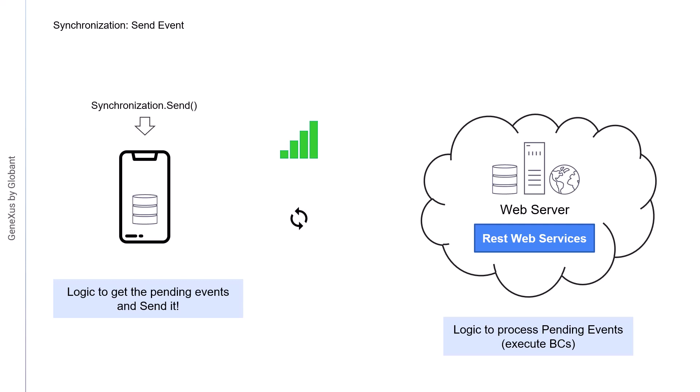The objective is to have the client run the least processing possible, because it has less power than the server. When the device starts the send operation, which can be started manually when the connection is restored through the synchronization.send method or never, it must have built an ordered list of the insert, update, and delete operations performed since the last synchronization. That is to say, those operations in pending status. This list is sent to the server-side process, which must run through the list in order and then execute the corresponding operation over the database, returning the result to the client-side process.